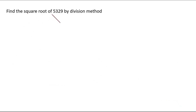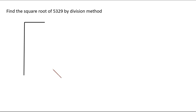Find the square root of 5329 by the division method. First we make the arrangement and write 5329. We do not know whether this is a perfect square or not, but before we start the actual division we need to form the pairs. So 29 will be the first pair and 53 will be the second pair.